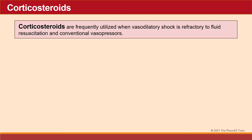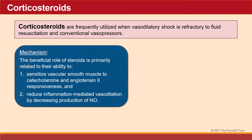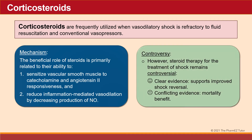Another class of drugs to consider in refractory shock are corticosteroids, frequently utilized when vasodilatory shock is refractory to fluid resuscitation and conventional vasopressors. Their beneficial role is primarily related to their ability to sensitize vascular smooth muscle to catecholamine and angiotensin II responsiveness. They also reduce inflammation-mediated vasodilation by decreasing nitric oxide production. However, steroid therapy for shock remains controversial — there is clear evidence supporting improved shock reversal, but conflicting evidence regarding mortality benefit.